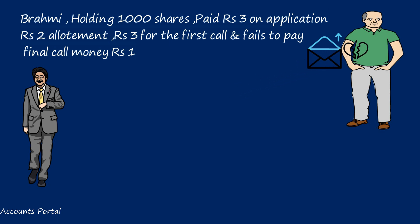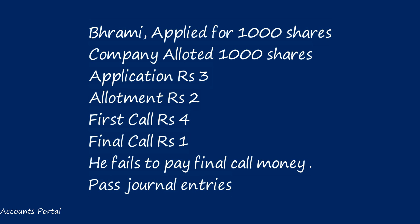Brahmi ignored the notice and failed to pay within the 14-day deadline. The directors decided to cancel the shares; once Brahmi receives the forfeiture letter, he is no longer a shareholder. Let us look at an example focusing on one shareholder to understand forfeiture. Brahmi applied for 1,000 shares and was allotted 1,000 shares: application rupees 3, allotment rupees 2, first call rupees 4, final call rupees 1 — he fails to pay the final call.